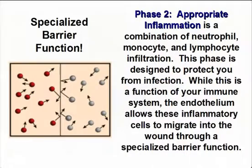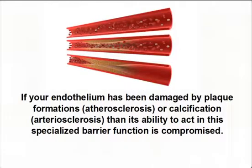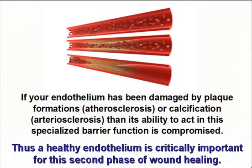Phase two, appropriate inflammation, is a combination of neutrophil, monocyte, and lymphocyte infiltration. This phase is designed to protect you from infection. While this is a function of your immune system, the endothelium allows these inflammatory cells to migrate into the wound through specialized barrier function. If your endothelium has been damaged by plaque formations, atherosclerosis, or calcification, arteriosclerosis, then its ability to act in the specialized barrier function is compromised. Thus, a healthy endothelium is critically important for this second phase of wound healing.